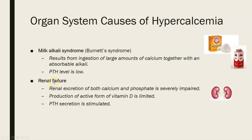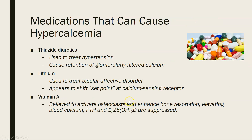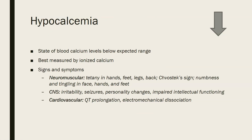In renal failure, renal excretion of both calcium and phosphate is severely impaired because the kidneys aren't working, so calcium accumulates. Production of the active form of vitamin D is also limited, and PTH secretion will be stimulated. Medications that can cause hypercalcemia include thiazide diuretics — used to treat hypertension — which cause retention of glomerularly filtered calcium. Lithium, used to treat bipolar affective disorder, appears to shift the set point of the calcium sensing receptor. Vitamin A is believed to activate osteoclasts and enhance bone resorption, elevating blood calcium, while PTH and 1,25-hydroxyvitamin D will be suppressed.